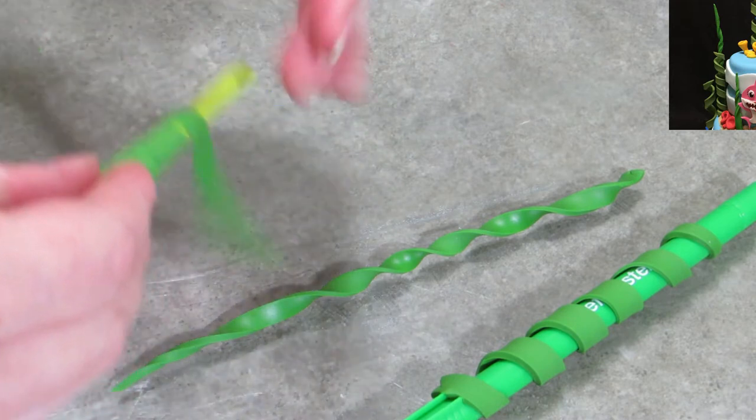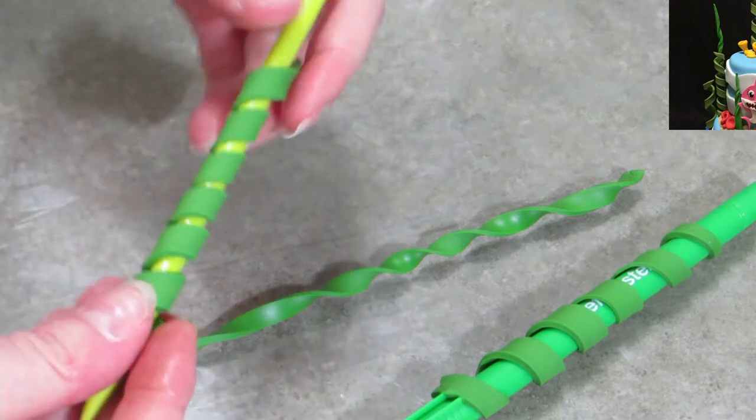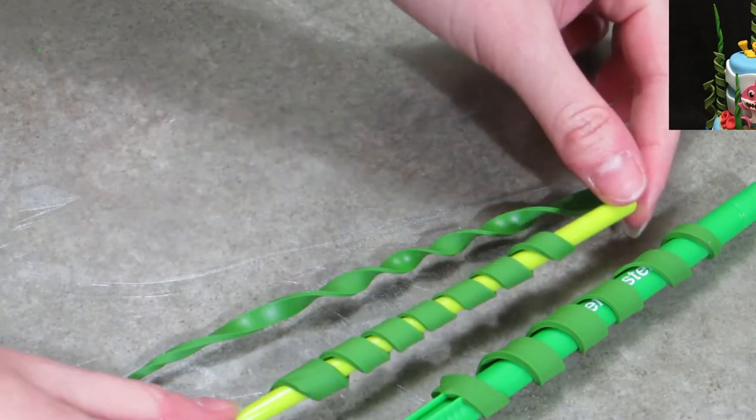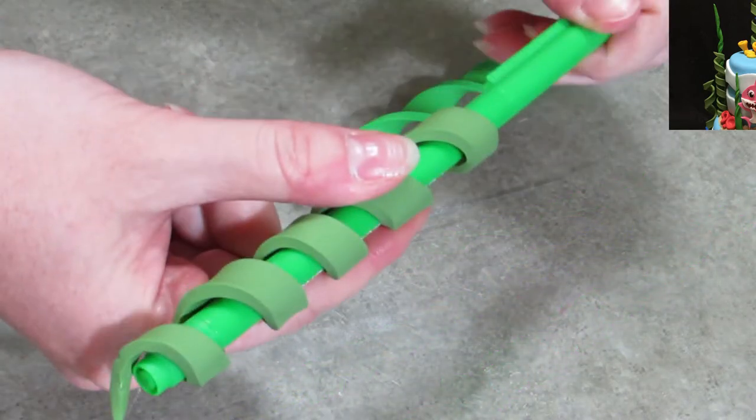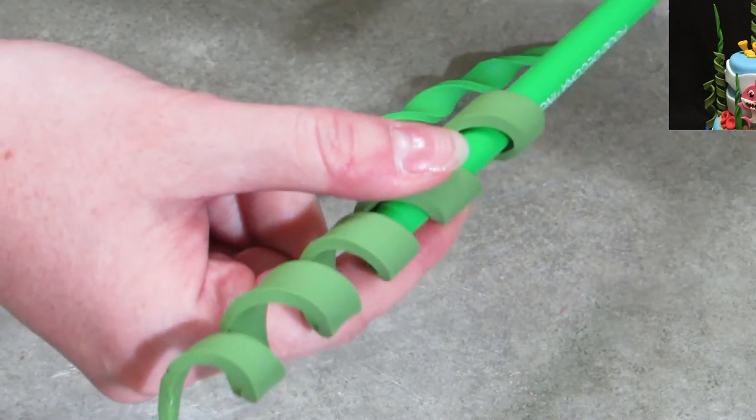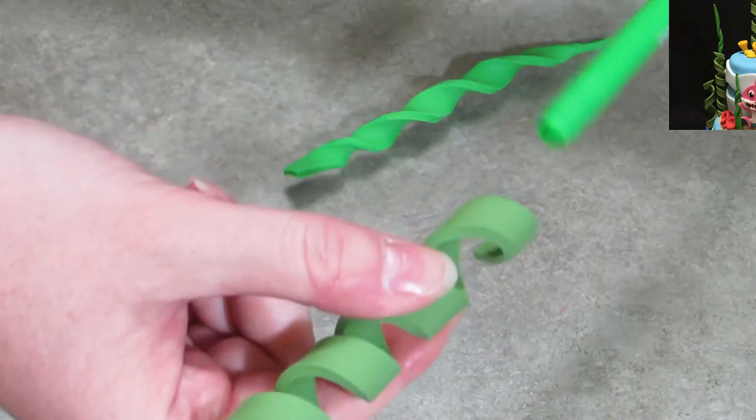I found something even skinnier to use. I'm using one of my pokey tools just so it's a tighter coil. Like I said, whatever size, whatever shape, make your coils, and once they harden, you see I'm just kind of gently twisting and pulling as I go, just kind of pulling the marker out very carefully.